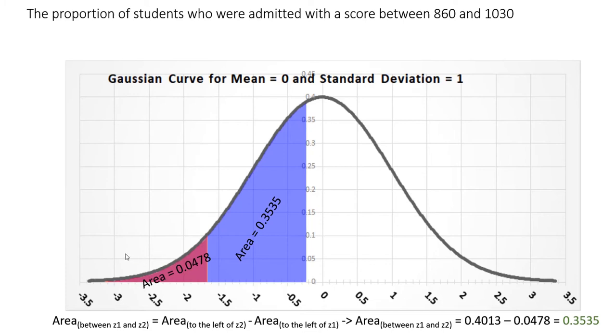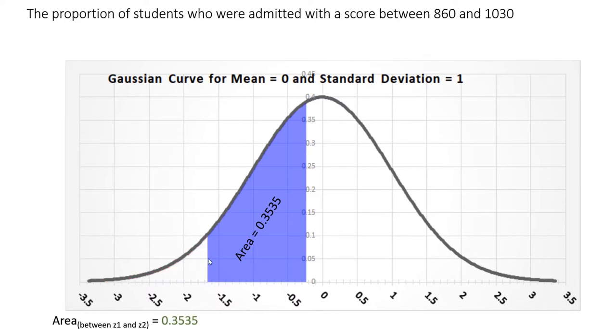Let's see what that looks like. And there we have it. The area in between these two z-values, which came from my original x-values of 860 and 1030, with a mean of 1060 and a standard deviation of 120, we now know that the proportion of students that fell in this area is 0.3535.